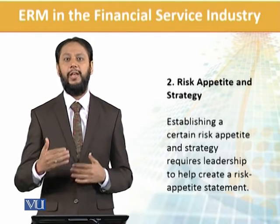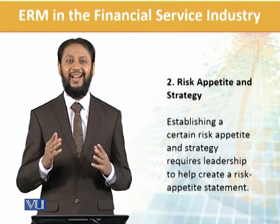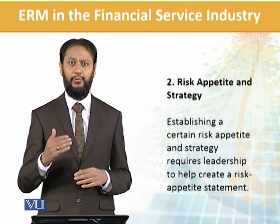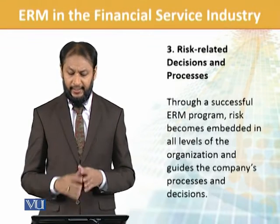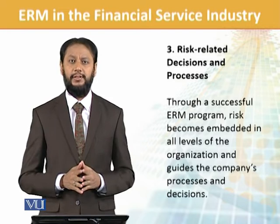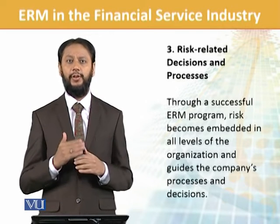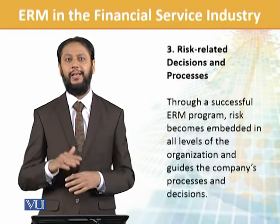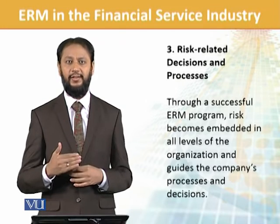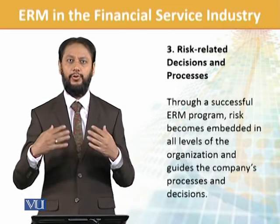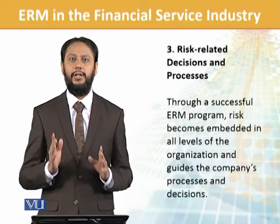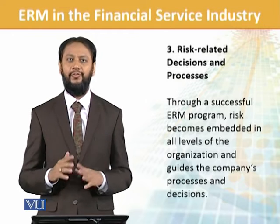The second core competency is risk appetite and strategy — you should know how much risk you can take and align that with your strategy. That is one of the core capabilities for good ERM. The third is risk-related decisions and processes — some decisions are pre-decided, some handle specific situations, but your strategy and structure should be well defined.